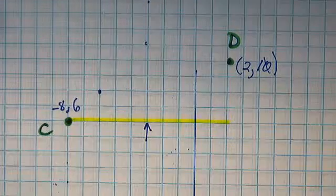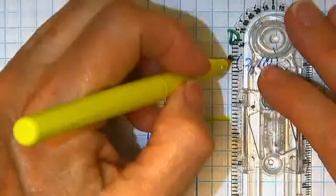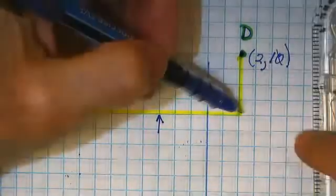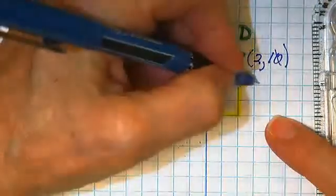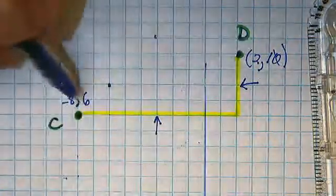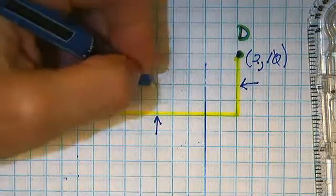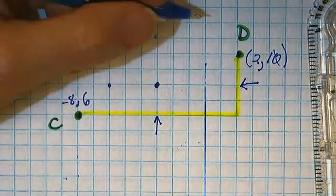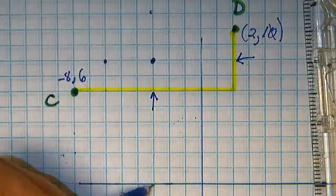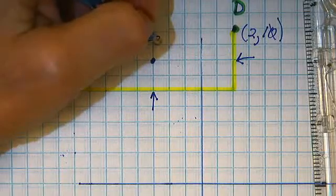Now what's the change in y? The change in y is 4. Halfway between C and D on the vertical axis is 2 more. So from 6 we go up 2 or from 10 we go down 2. In either case, this is going to be the midpoint. And the coordinates of my midpoint are negative 3, positive 8.